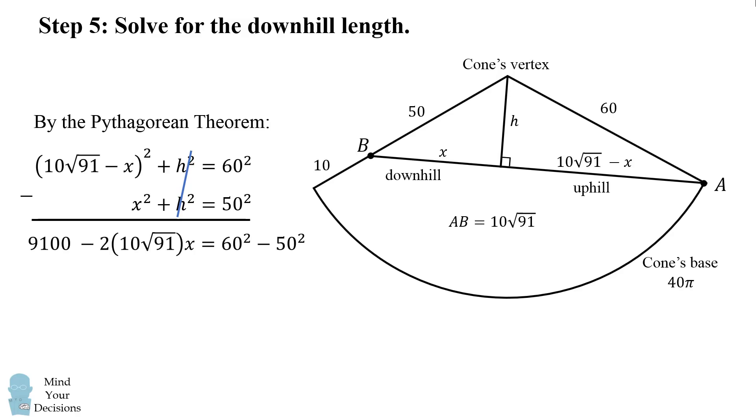So this will simplify to be 9100 minus 2 times 10 times the square root of 91 times x is equal to 60² minus 50². We're going to simplify this equation and then solve to get x is equal to 400 divided by the square root of 91.